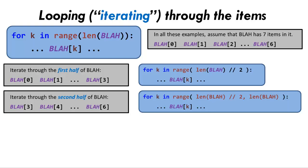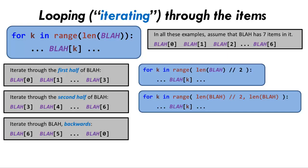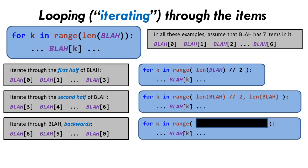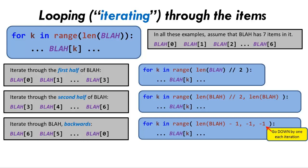Yet another example. Suppose that you want to iterate through the sequence backwards. So here we want to examine item 6, then item 5, then item 4, and so forth. What range expression would you use to iterate through the sequence backwards? Pause the video briefly to think through your answer. This time we need a range expression that starts at the last element, whose index is the length of the sequence minus one, and goes down by one at each iteration of the loop, stopping when it reaches minus one, and hence including zero but not minus one. Here I used the three-argument form of range. There are other ways to solve this problem too.